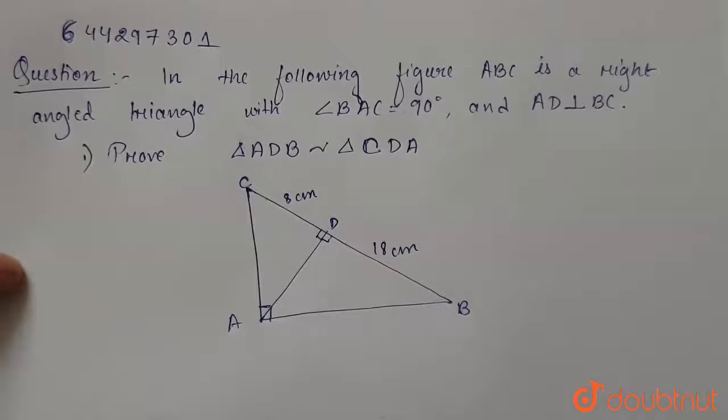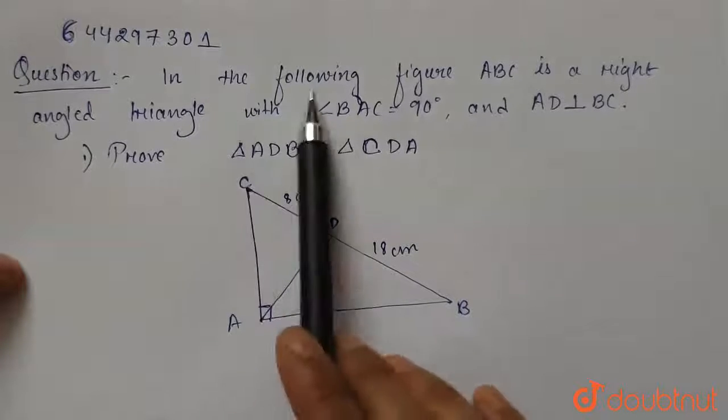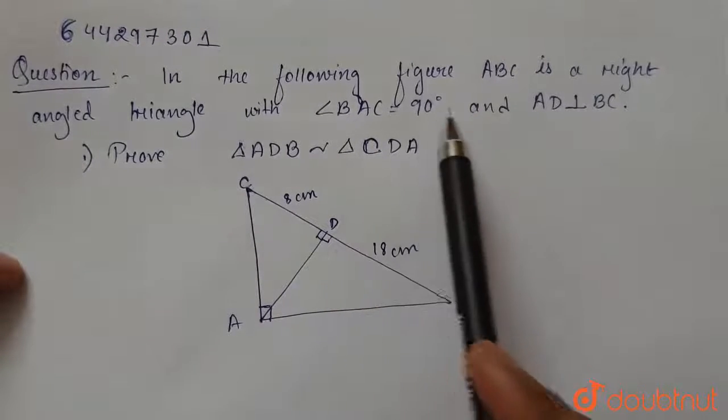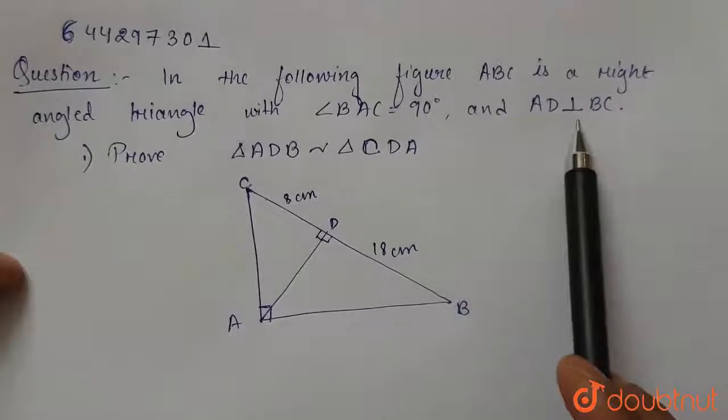Hello everyone, so today our question is: in the following figure ABC is a right angle triangle with angle BAC equals to 90 degrees and AD is perpendicular to BC.